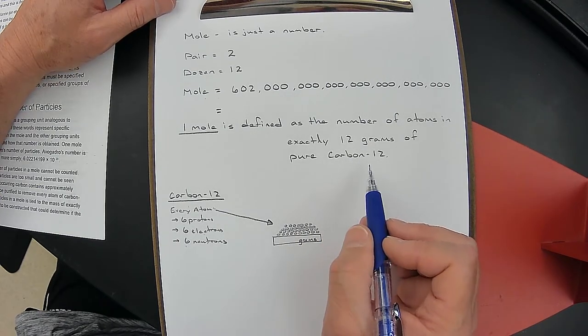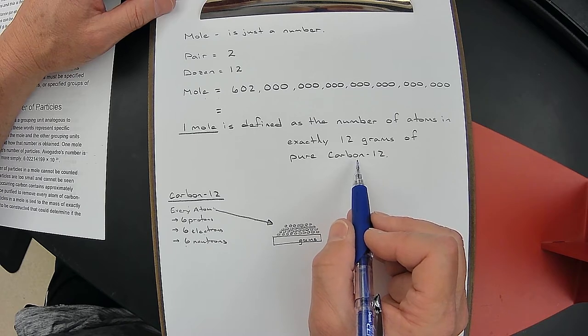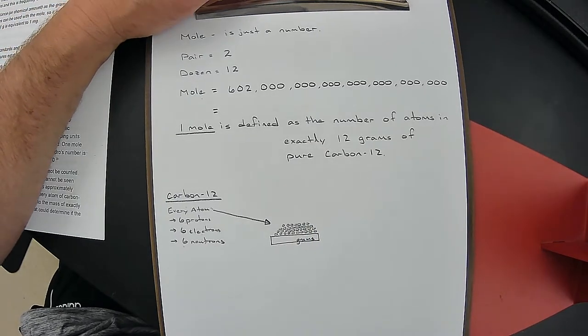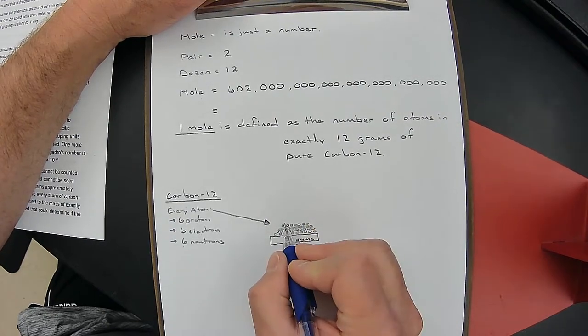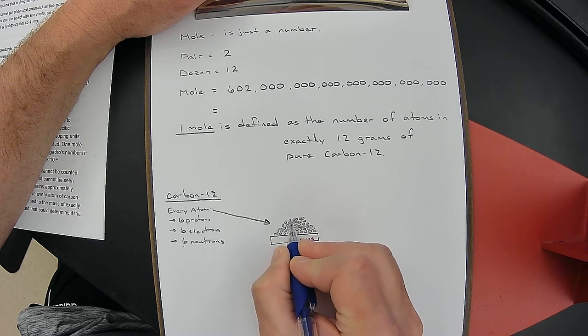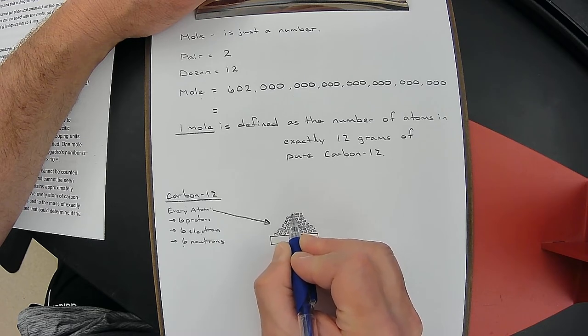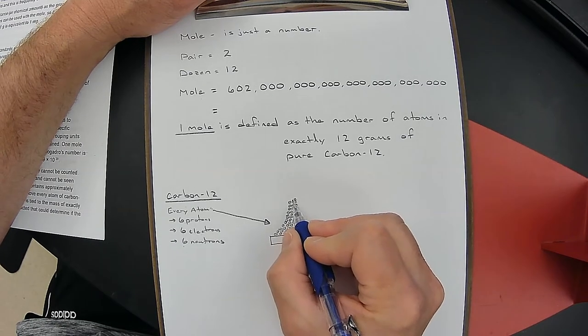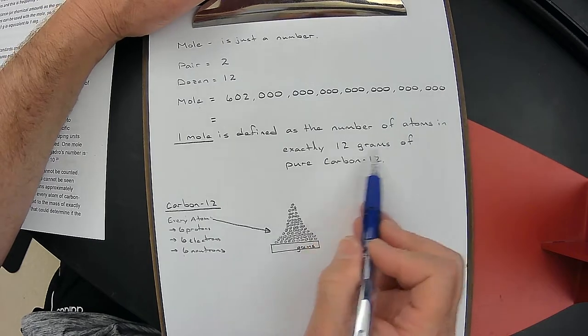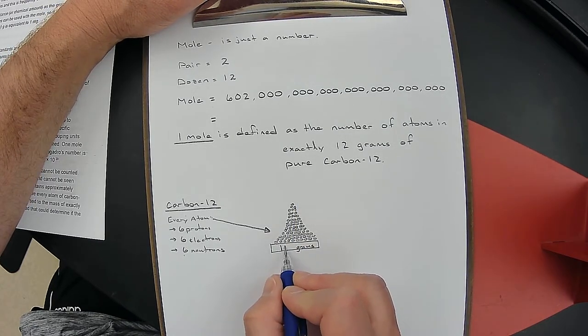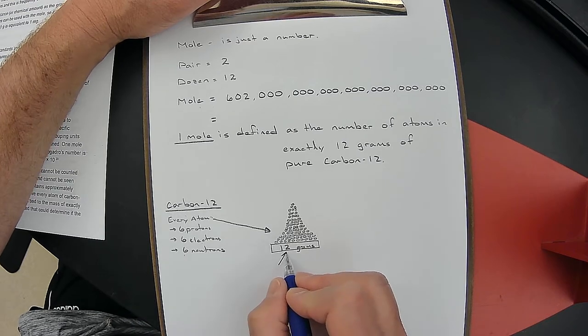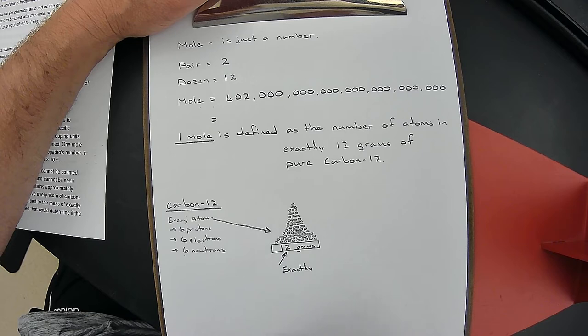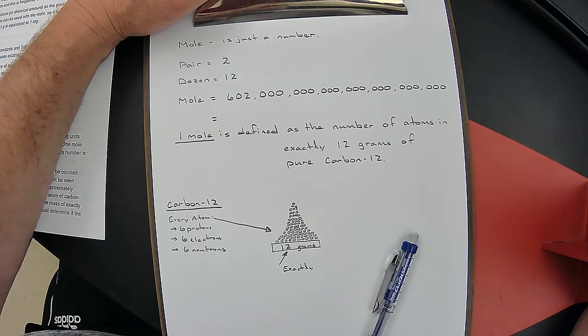Every atom we put on here has six protons, six electrons, and six neutrons. Why did we pick carbon-12? We could have picked any atom from the periodic table. Maybe because carbon is the element of life, the backbone of DNA, carbohydrates, fats, and proteins. But it doesn't matter - they chose carbon-12. We're putting atoms of carbon-12 on a balance, one atom at a time. We keep piling atoms on the scale. What is the scale supposed to read? Twelve grams. Not just twelve grams, but exactly twelve grams.